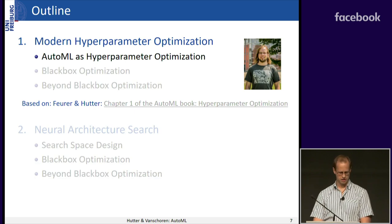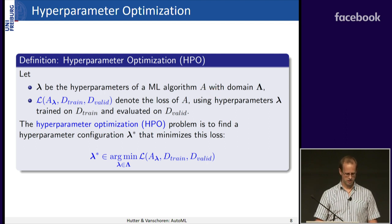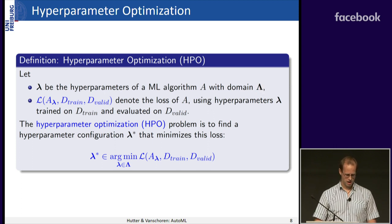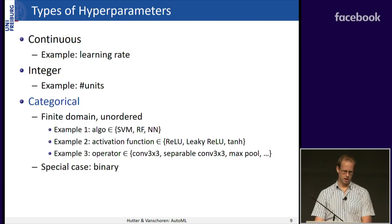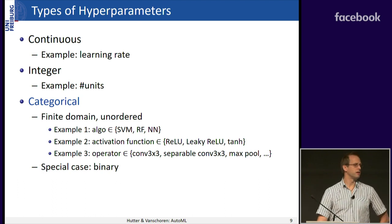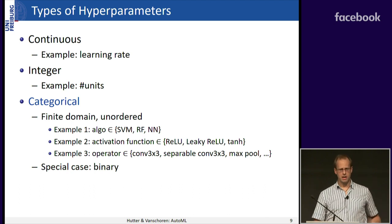Let's define the hyperparameter optimization problem. We have some machine learning algorithm A with hyperparameters lambda in domain capital lambda. We have a loss that depends on the algorithm with hyperparameters, trained on a training set and validated on a validation set. The HPO problem is to find the hyperparameter setting that minimizes this validation loss. Hyperparameters include continuous ones such as learning rates, integer ones such as number of units, and categorical ones such as choice of algorithm — SVM, random forest, or neural network — or activation functions like ReLU, leaky ReLU, or tanh.